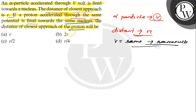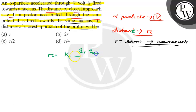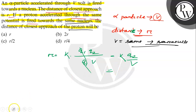So R is equal to K into Q1 Q2 divided by Q1 into V, where V is the potential difference. Here Q1 and Q1 are cancelled, so this equals K Q2 divided by V. From this we get that Q2 is constant, V is the same for all cases. So these terms cancel and R is equal to a constant K.